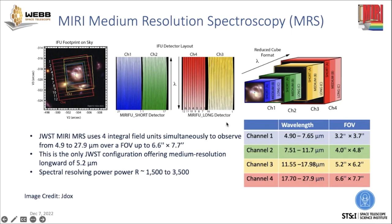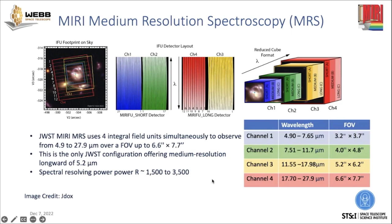The raw data you get when you take a single observation is a short detector and a long detector image. Channels 1 and 2 are both on the short detector, and channels 3 and 4 are on the long detector. The spectral resolving power ranges from 1,500 at the longest wavelength up to 3,500 at the shortest wavelengths.